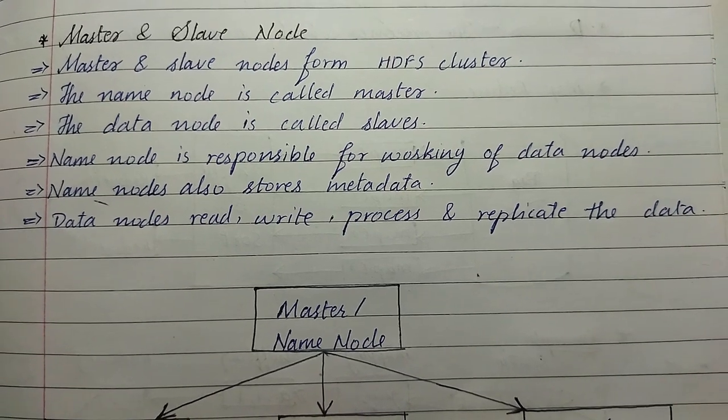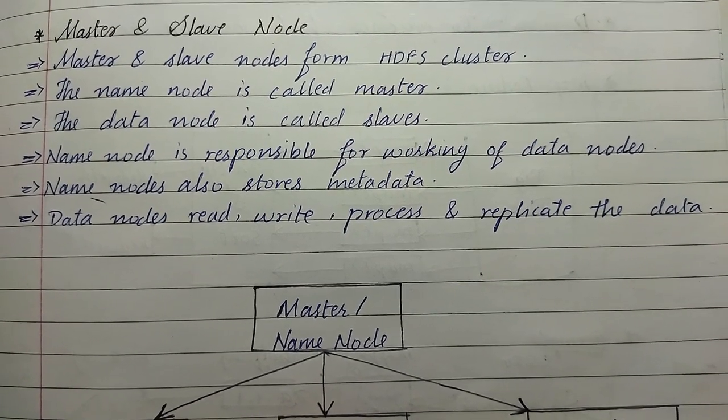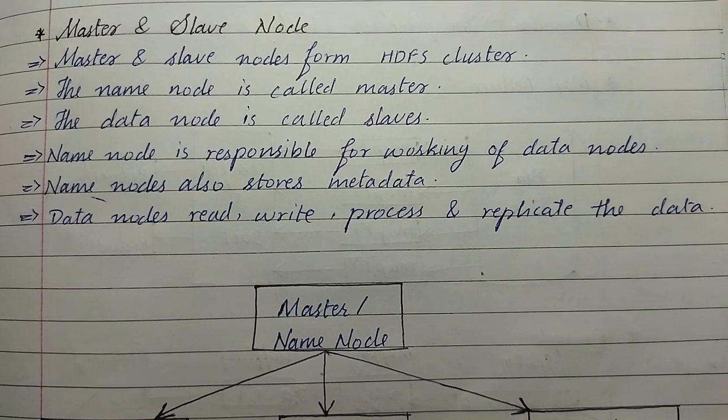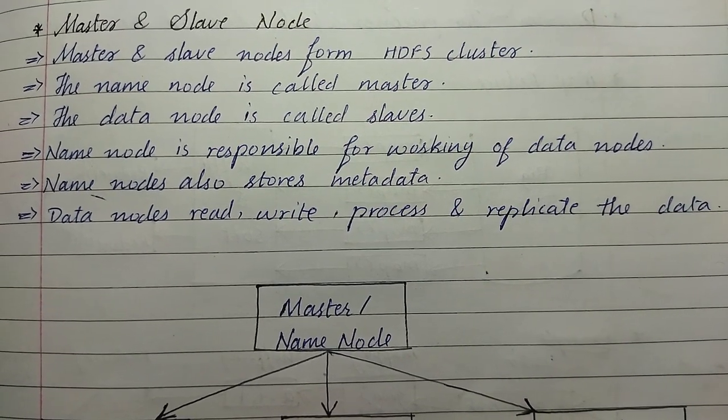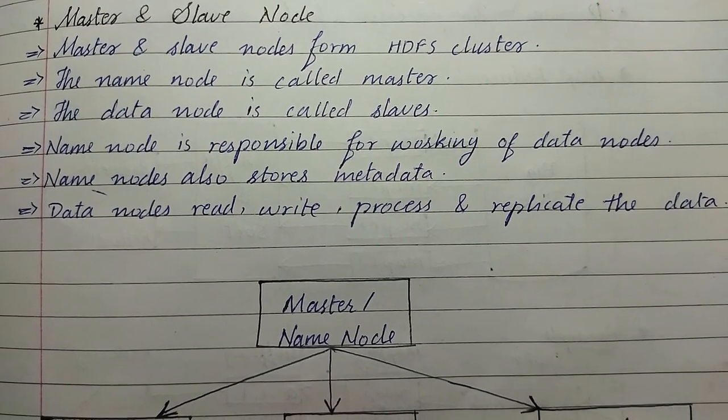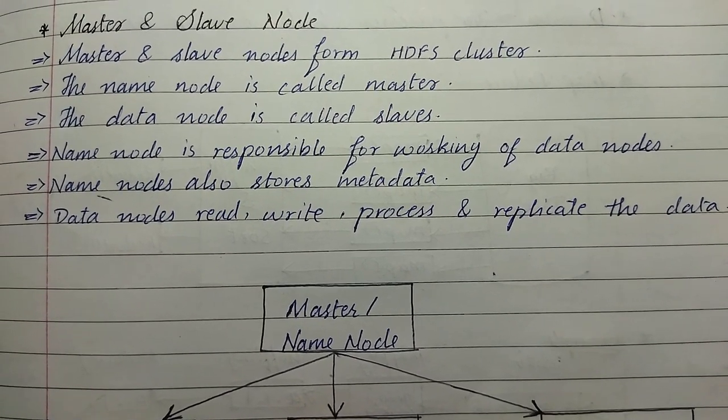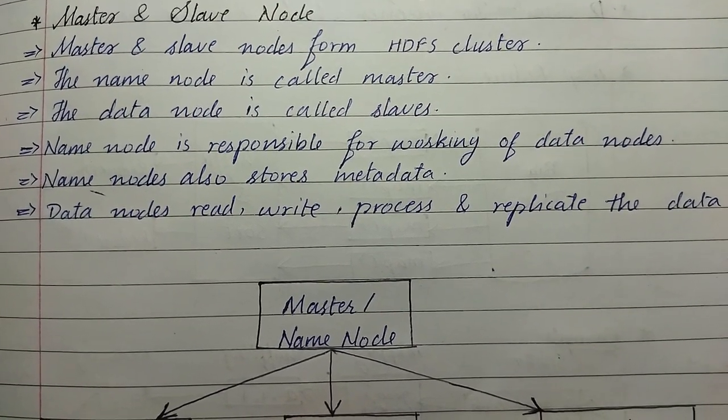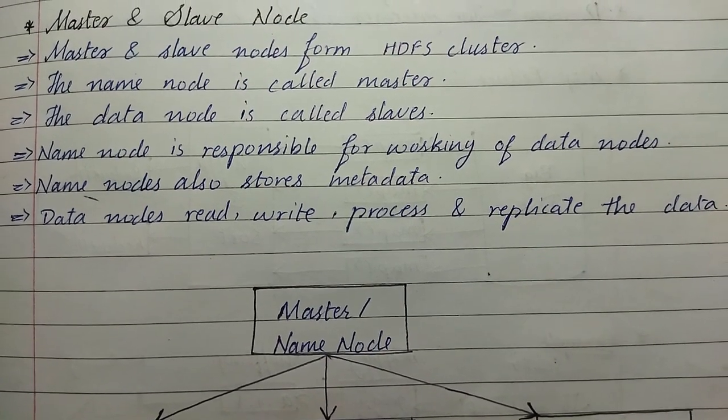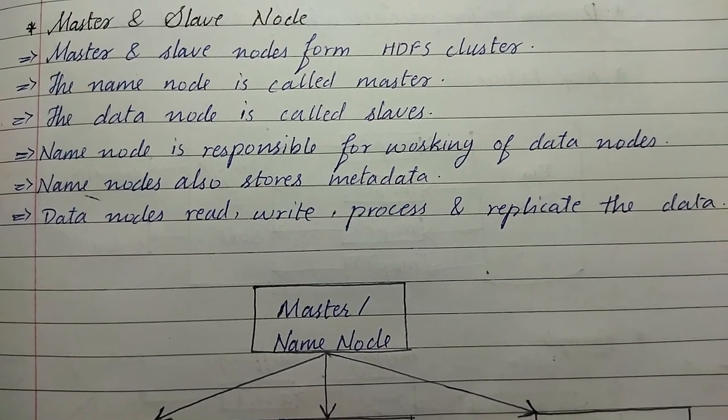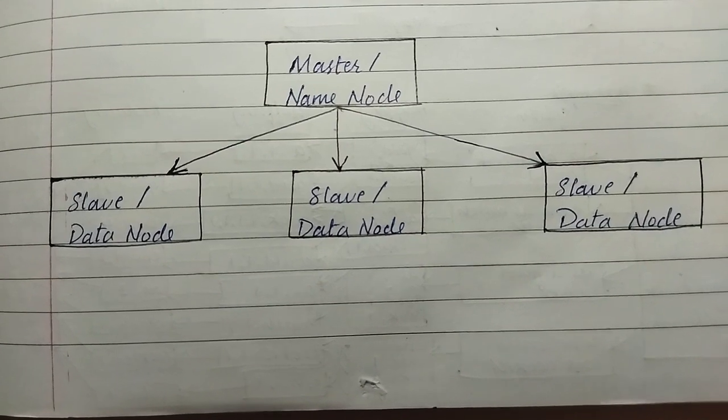Master and slave nodes form the HDFS cluster. The name node is called master while the data node is called slave. The name node is responsible for working of data nodes and also stores metadata. Data nodes read, write, process, and replicate the data. This is how the master node and slave node can be represented.